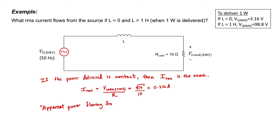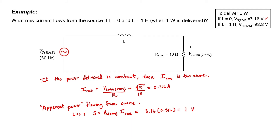The apparent power flowing from the source is different in the two cases, even though the power reaching the load is still 1 watt. We know that apparent power at the source is the RMS voltage times the RMS current. We previously calculated that the RMS voltage is 3.16 volts in the no-inductor case. Multiplying by the current, we end up with 1. When talking about apparent power, we don't label it in watts — we usually label it as VA, or volt amperes.